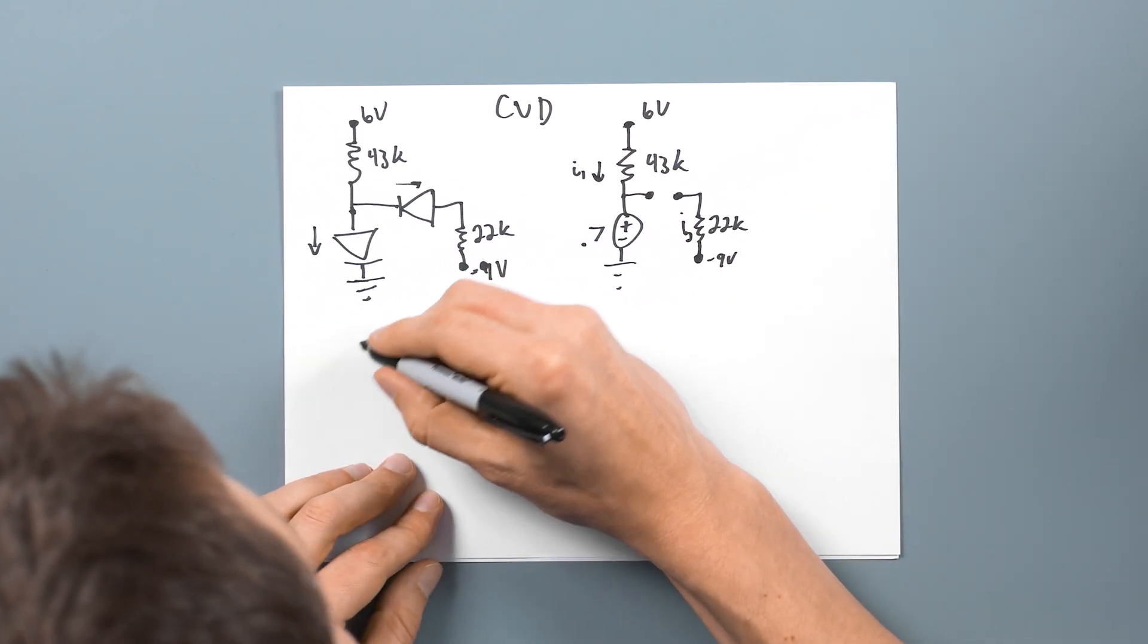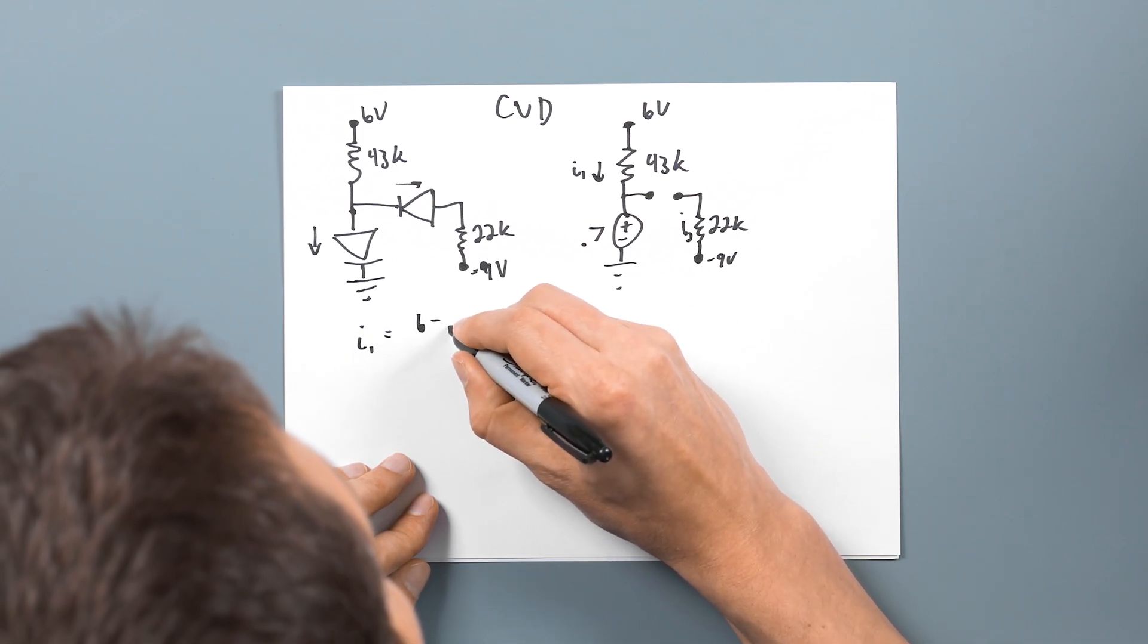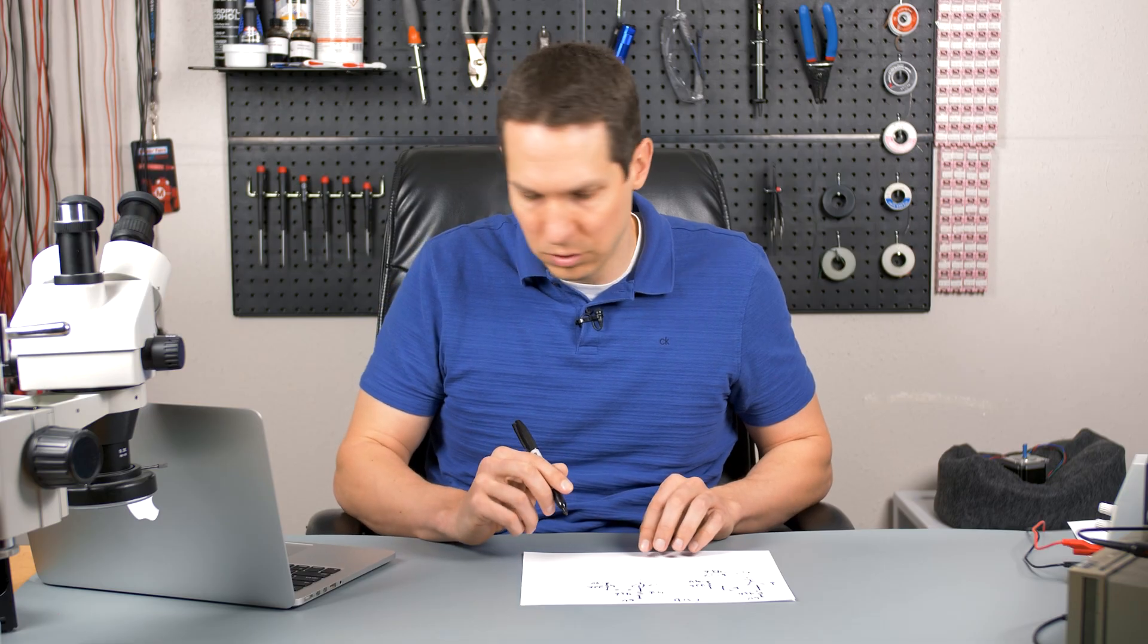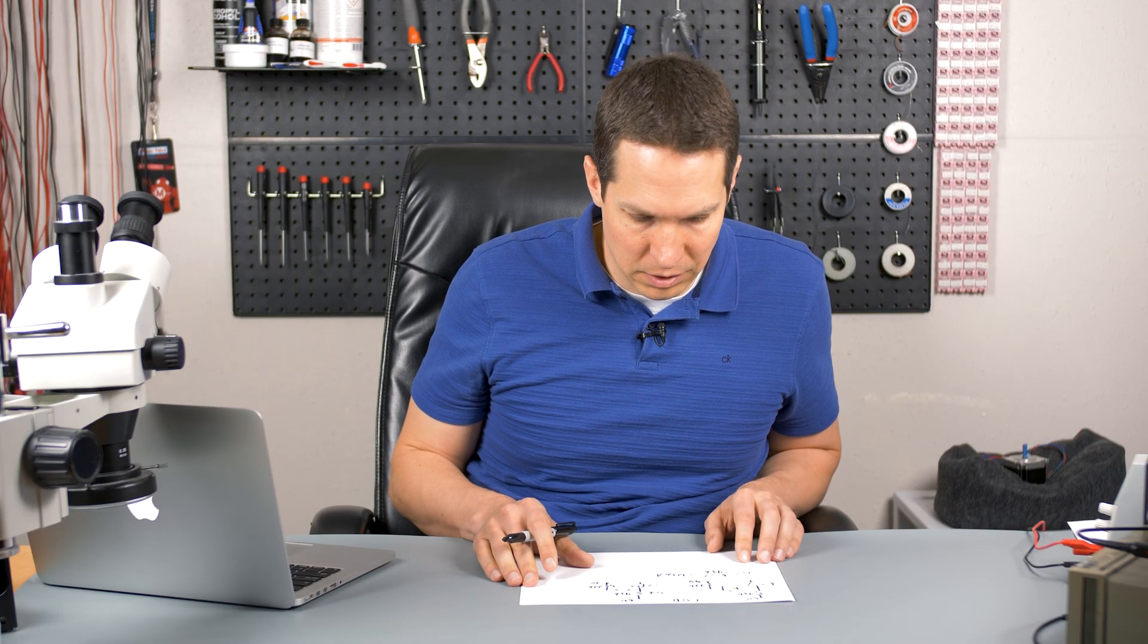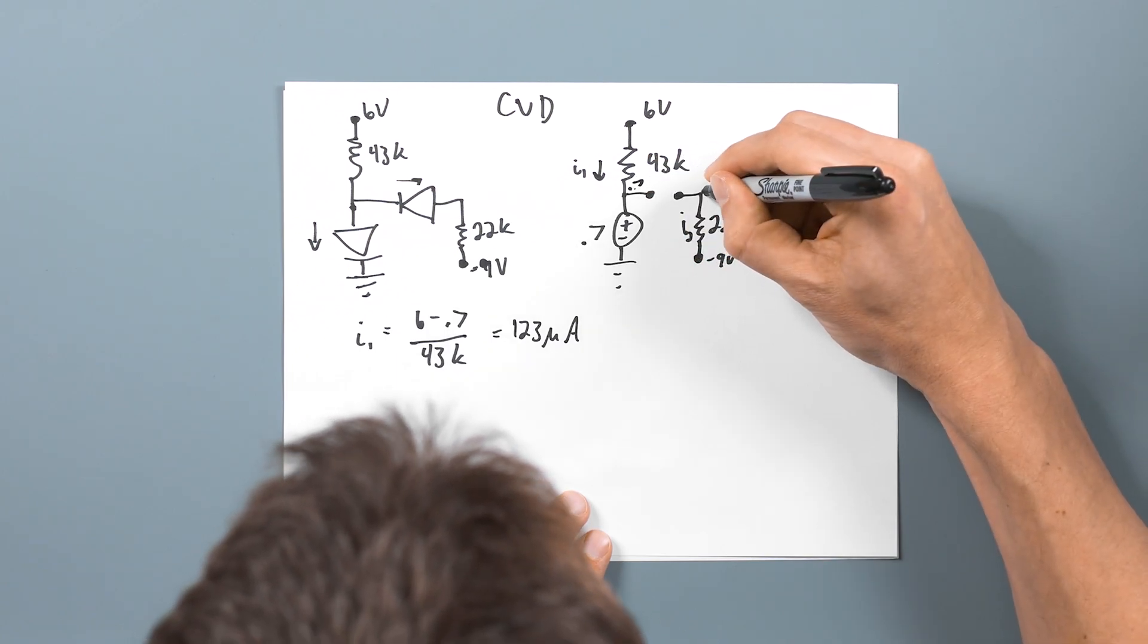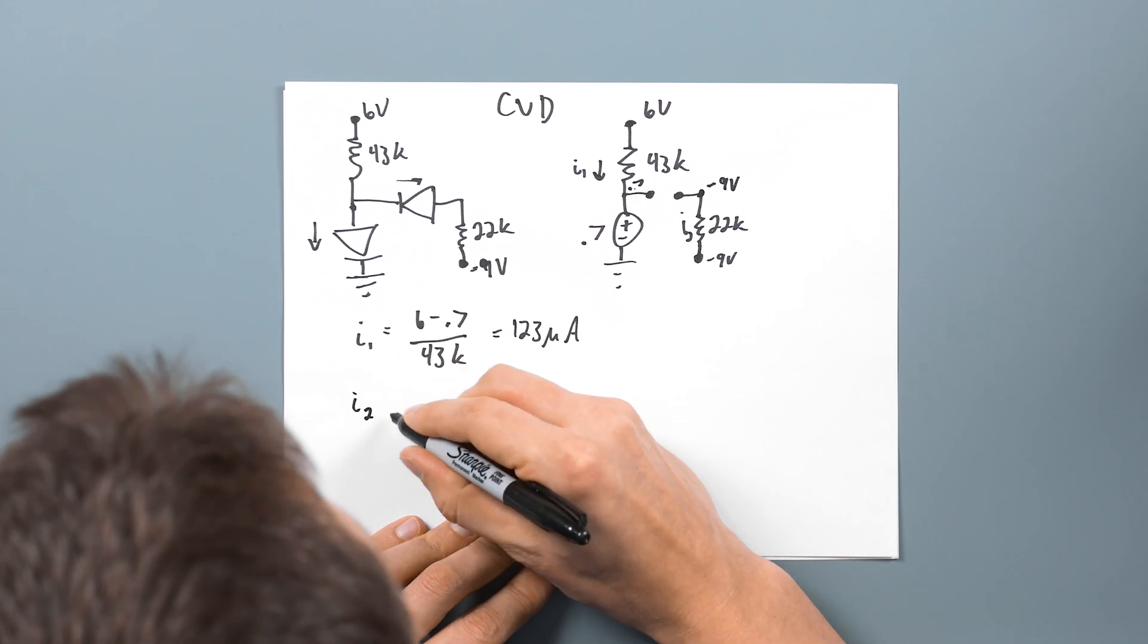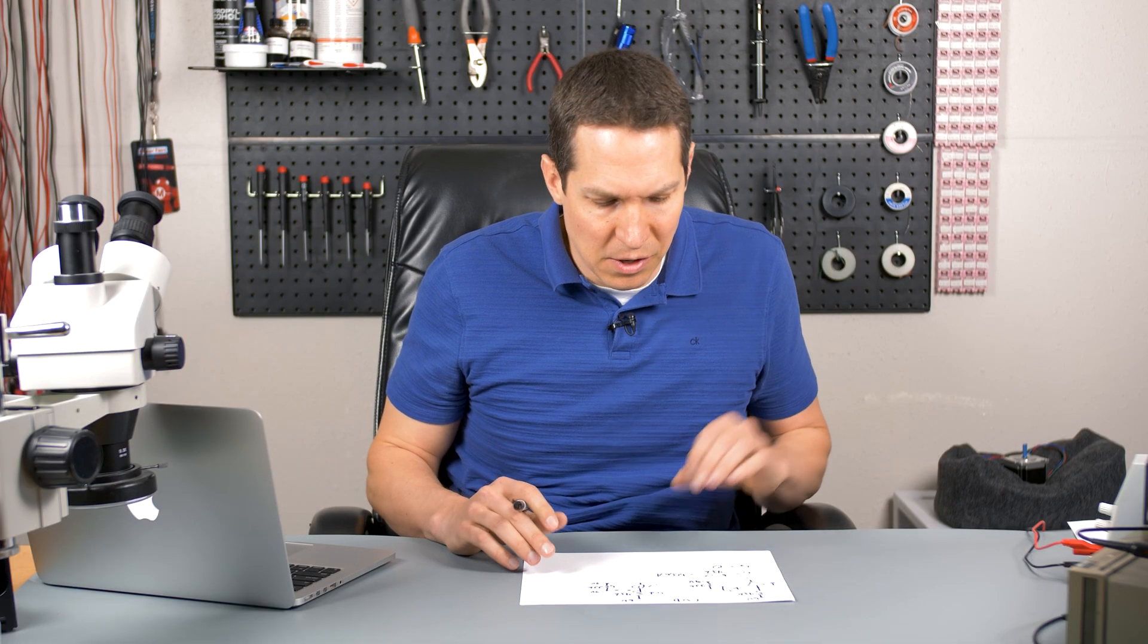Let's see, or should I do this? I1 equals six minus 0.7 over 43k divided by 43,000. It's going to give me 123 microamps. And it is going to put this voltage right here is going to be 0.7. And this voltage at this node is going to be negative nine volts. And we assume I2 is just going to be zero, because nothing can flow through that.